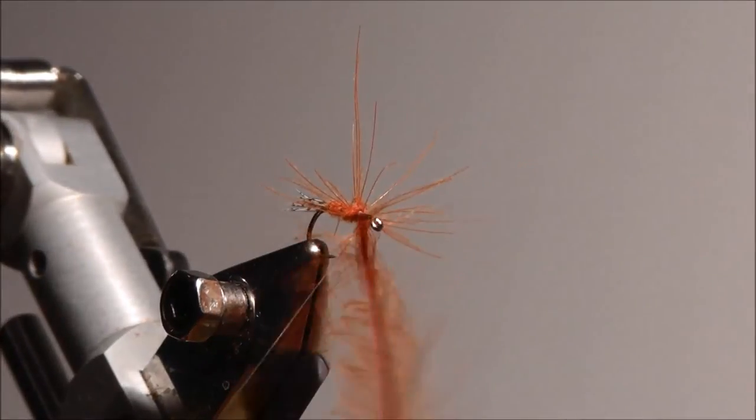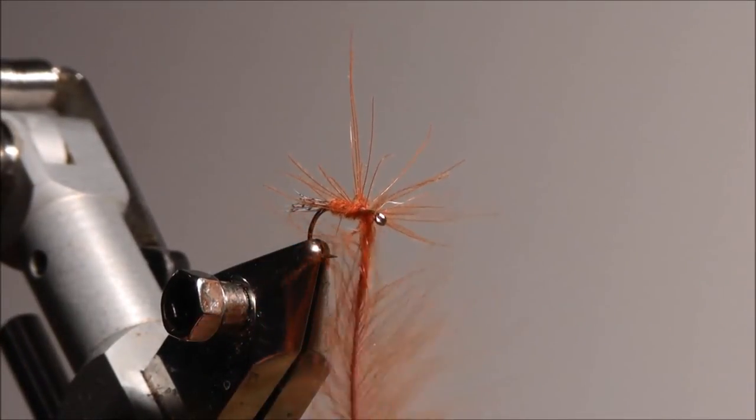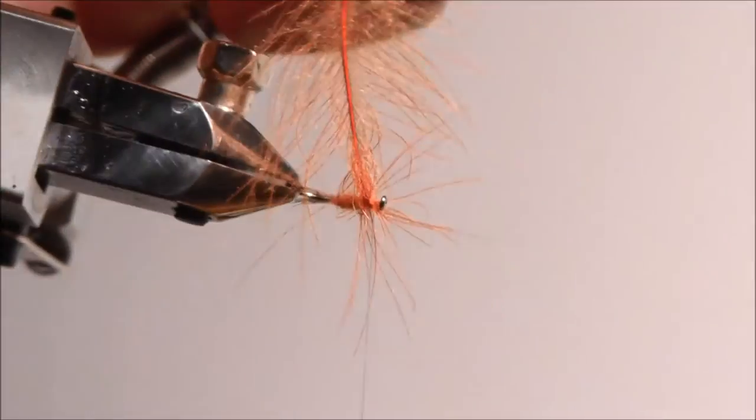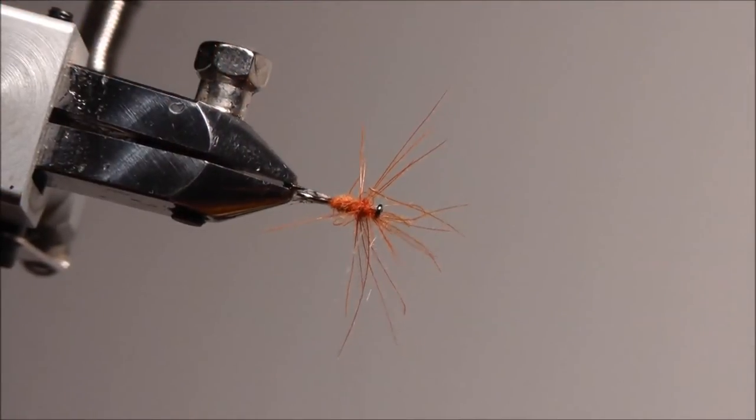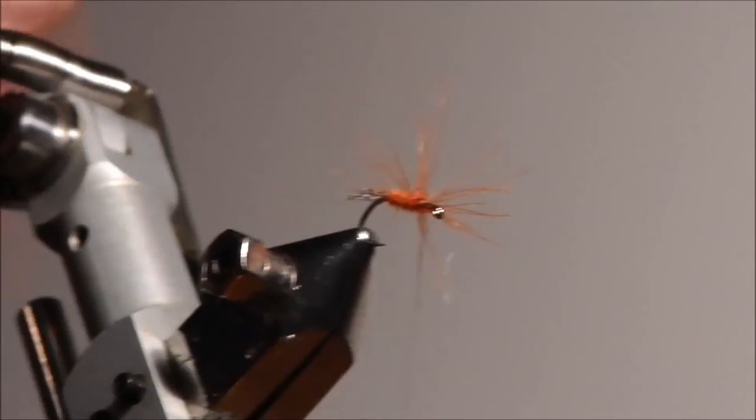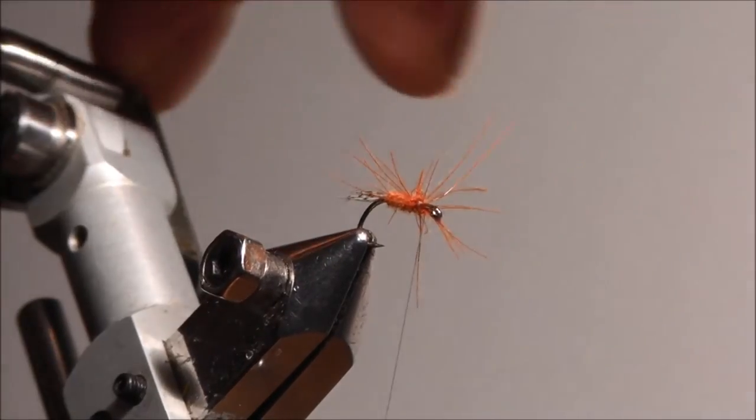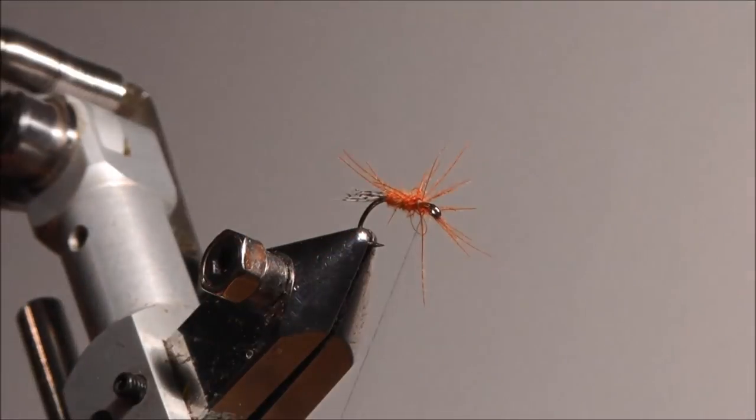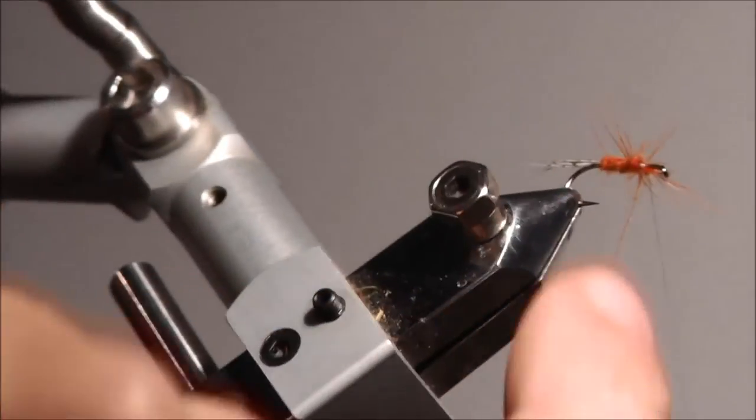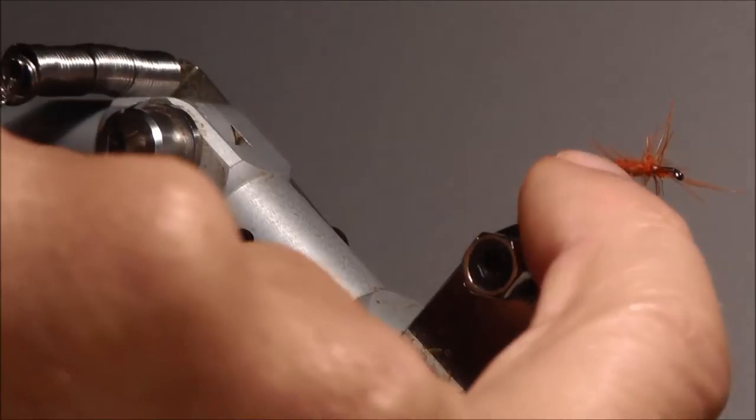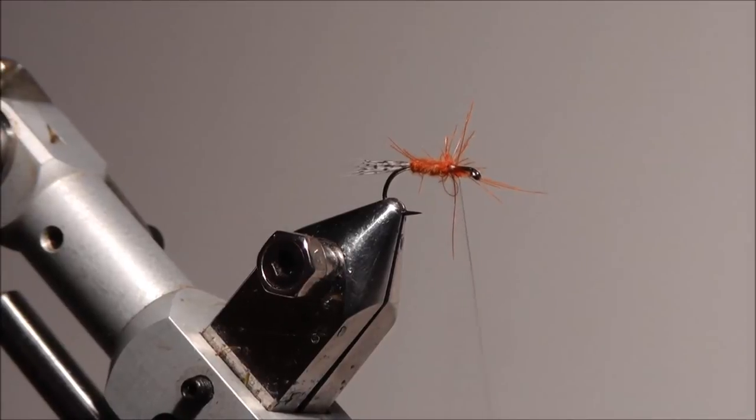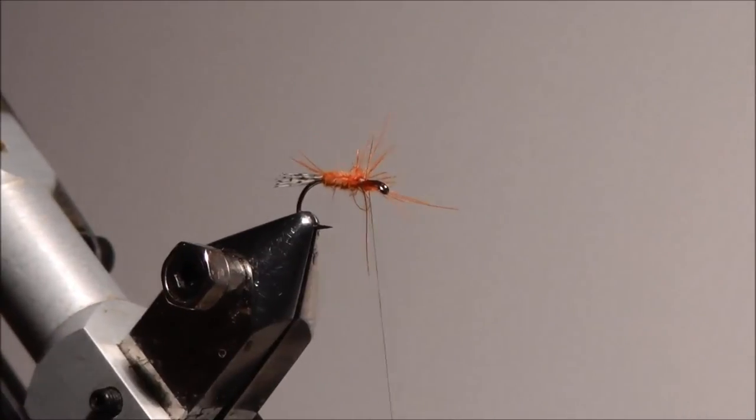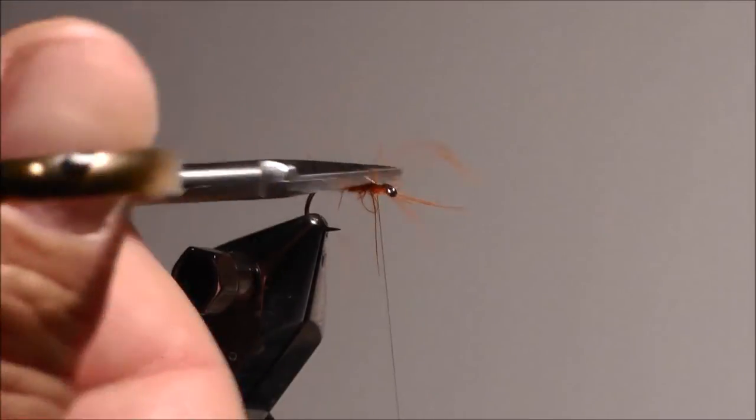I'll tie it off. You can leave those barbs on if there aren't too many. What you can see is a segmented body here, because the stem of your CDC feather gets bigger the more you go toward the end.